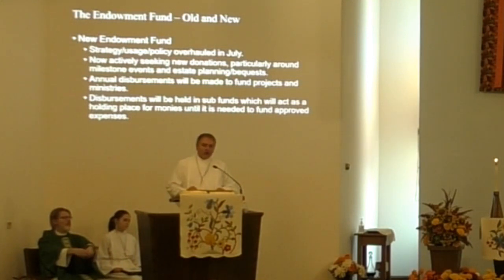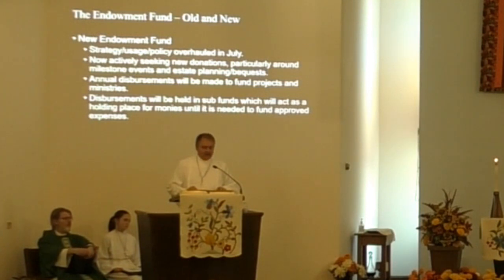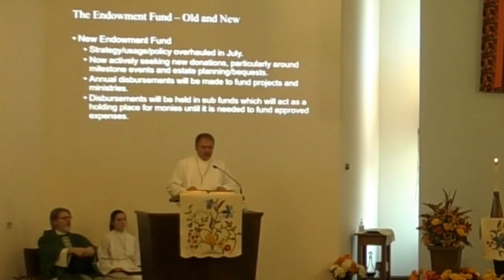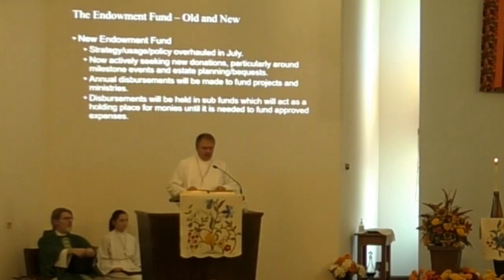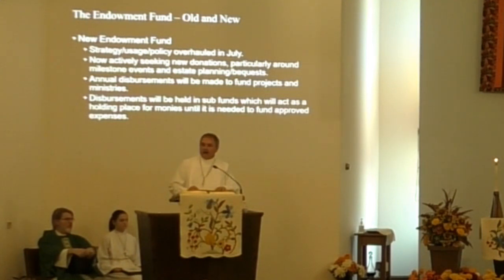In July of this year, we dramatically overhauled that strategy, the governing policy and planned usage of this fund. The new policy governing this fund is very detailed, but here are a few highlights. A vital new aspect to the endowment fund will be that the church will actively seek new donations to this fund, focusing specifically on milestone events like birthdays, anniversaries, and other key lifetime occasions for periodic donations, as well as estate planning bequests as potential larger one-time gifts. This will provide the opportunity to grow the fund over time. An annual disbursement of 5% of the year-end value of the endowment fund will now be made. In addition, 20% of any new money donated to the fund each year will be added to that 5% disbursement in order to accelerate the rate of disbursement while still allowing for the growth of the fund balance across time.